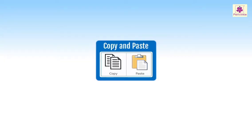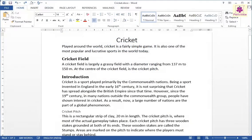In MS Word, you can create a copy of selected text at another location without retyping it. We can use copy and paste commands for it. Let's first open a document titled Cricket, and select the paragraph under the heading Cricket Field.